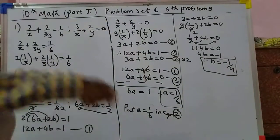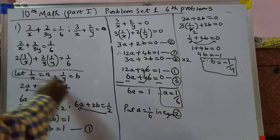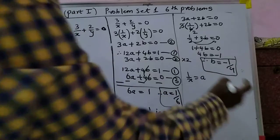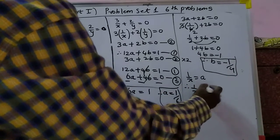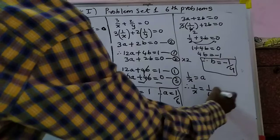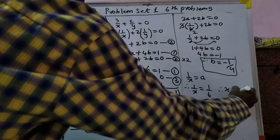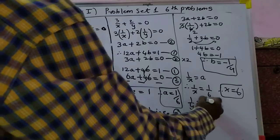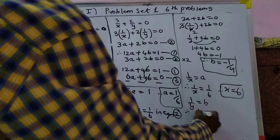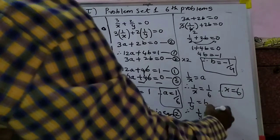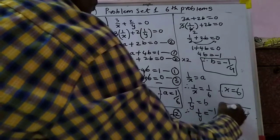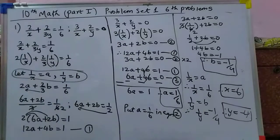Now finding the original variables. Since 1 upon x equals a, we get 1 upon x equals 1 by 6, therefore x equals 6. And since 1 by y equals b, 1 by y equals minus 1 by 4, therefore y equals minus 4. So the final answer for this problem is x equals 6 and y equals minus 4.